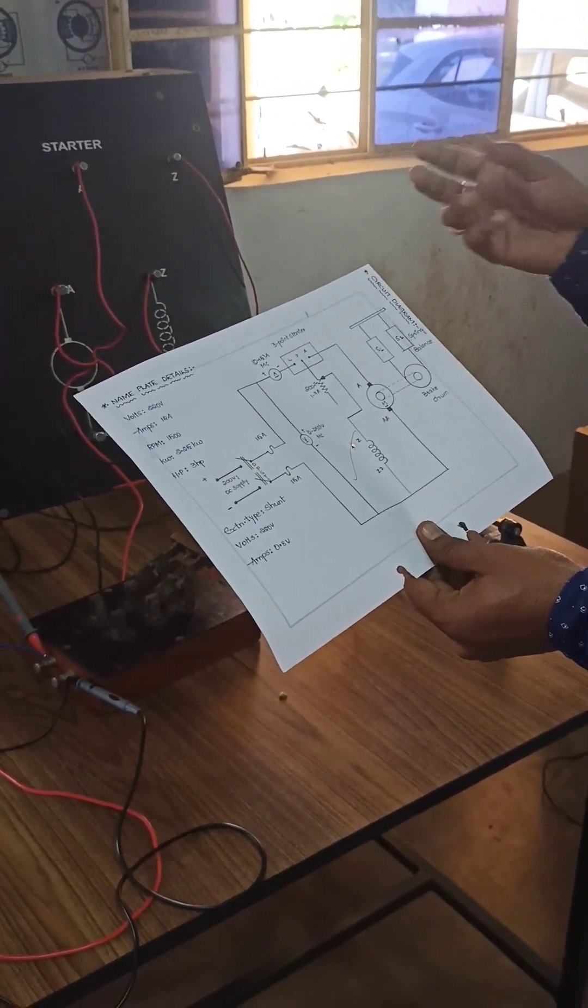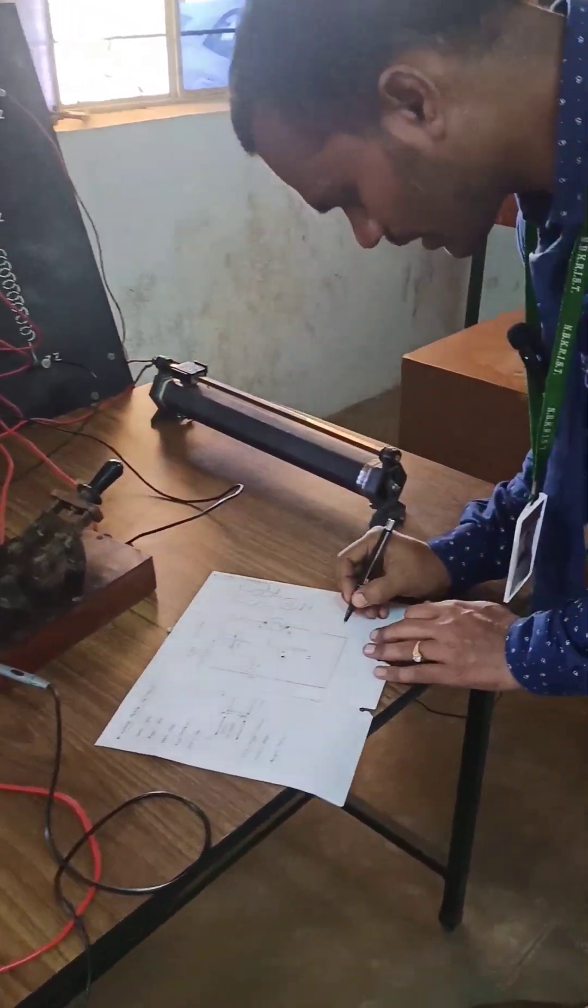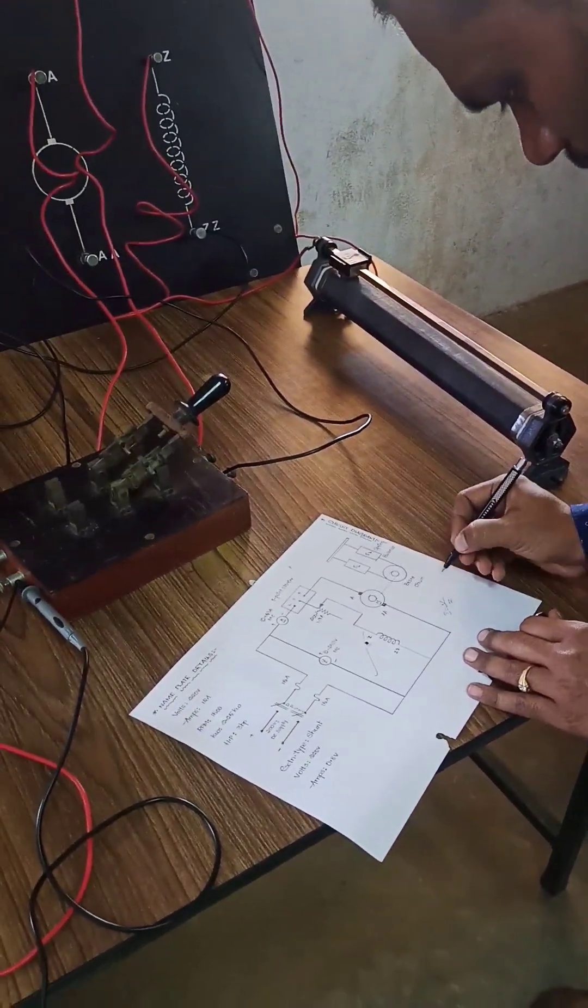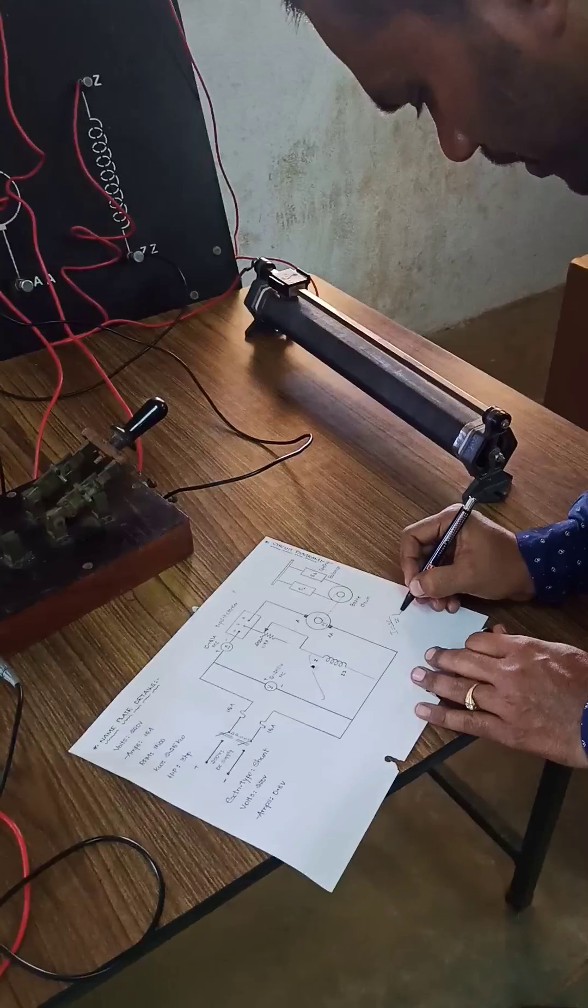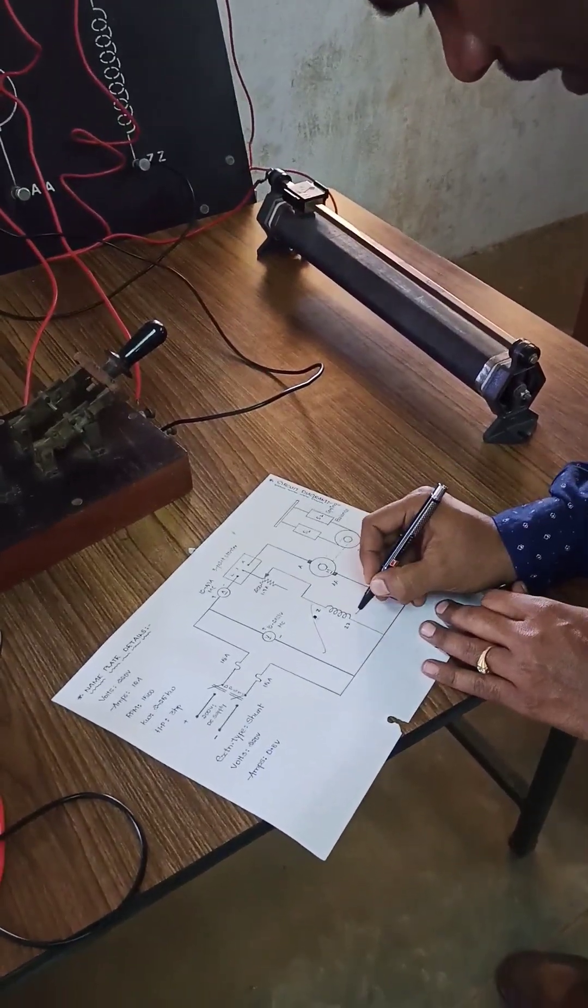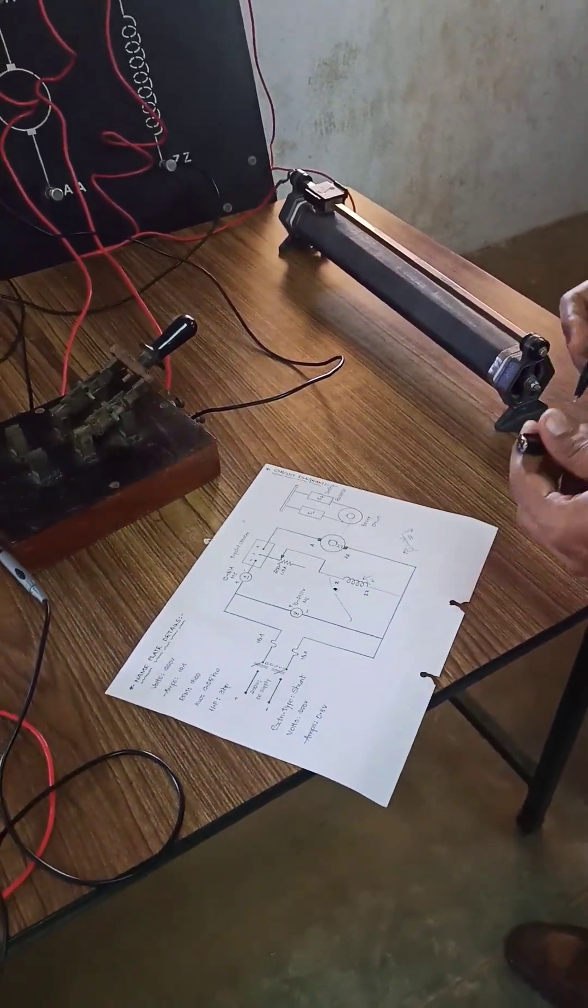Whenever field rheostat I is equal to V by R, here we are keeping in minimum resistance such a way that maximum current flows to the field winding.